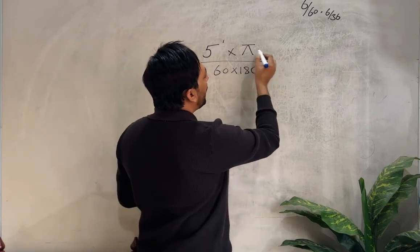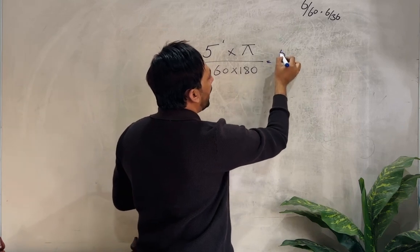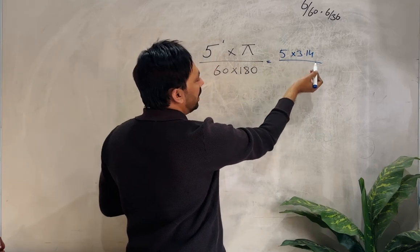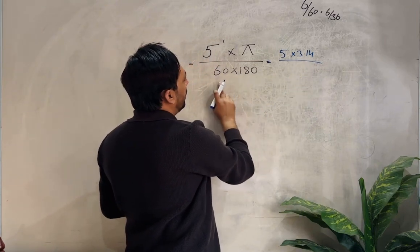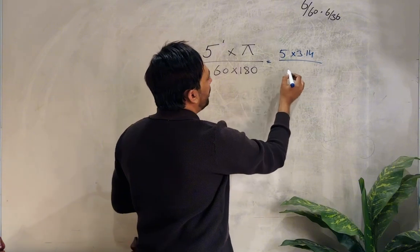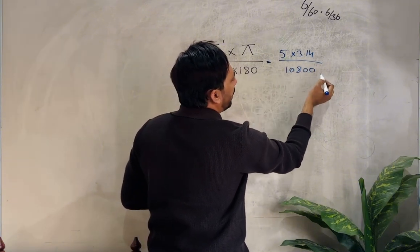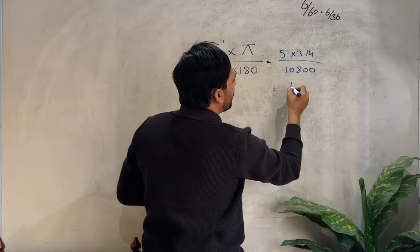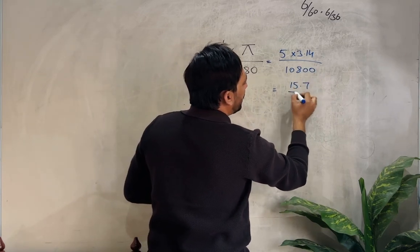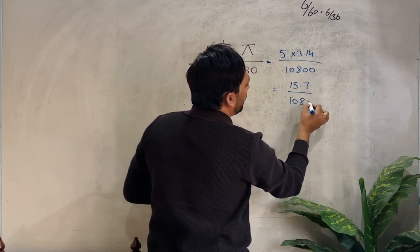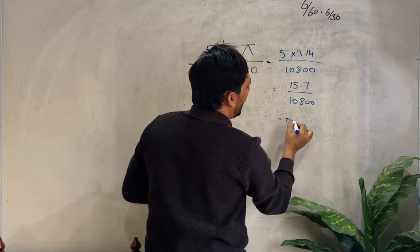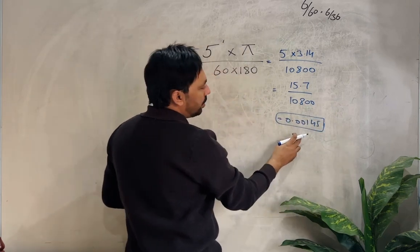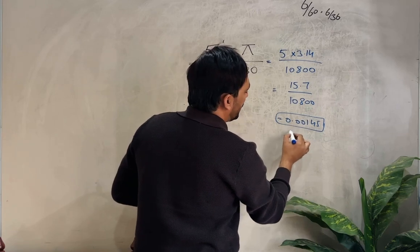The value of pi is 3.14, so 5 × 3.14 = 15.7. And 60 × 180 = 10,800. So 15.7 / 10,800 gives us 0.00145 radians. This value of 0.00145 is in radians.